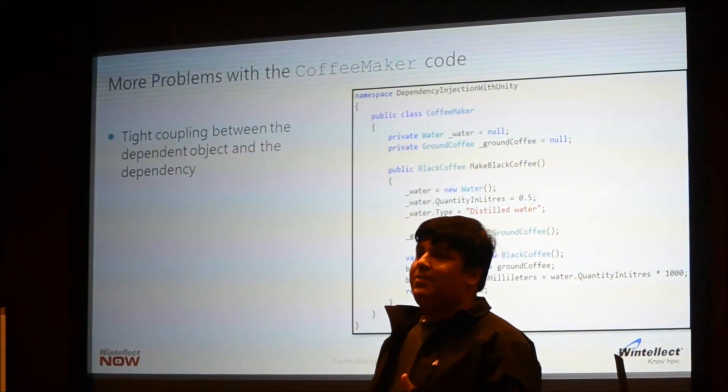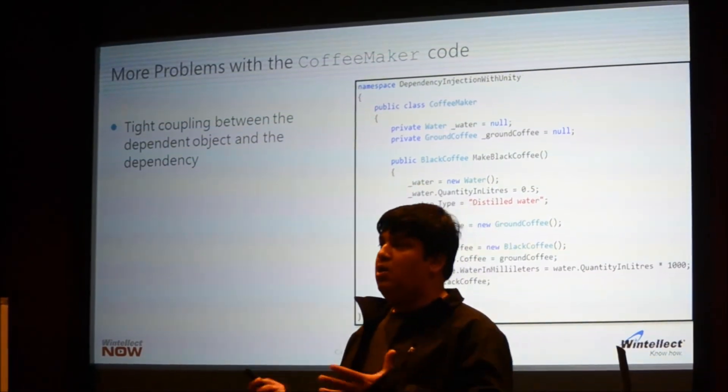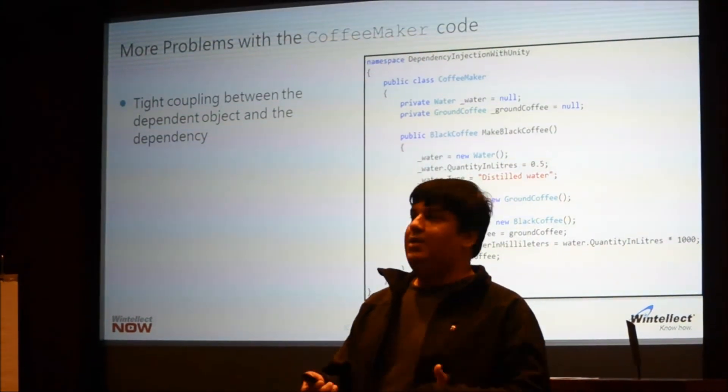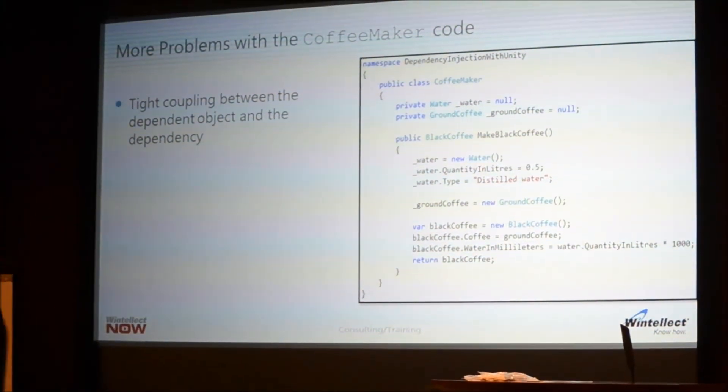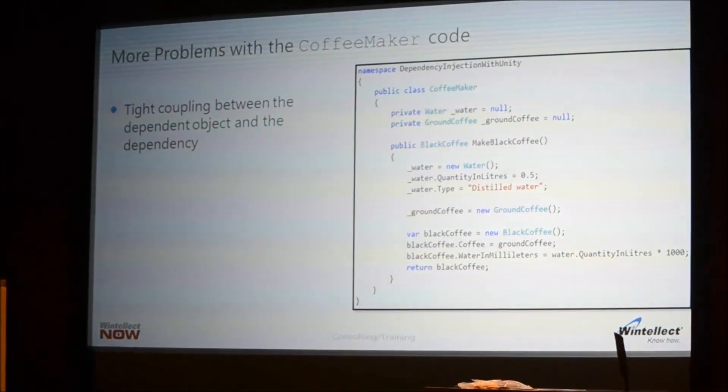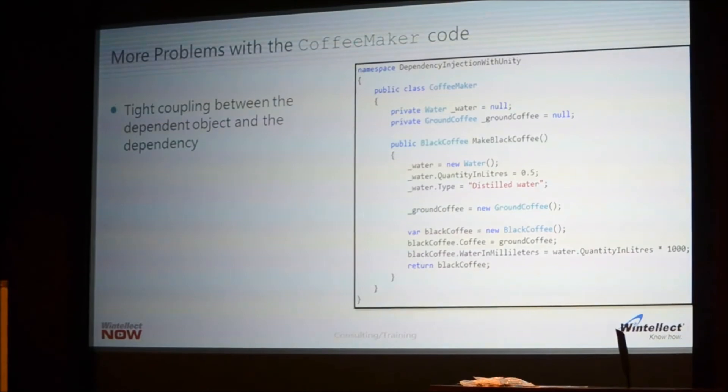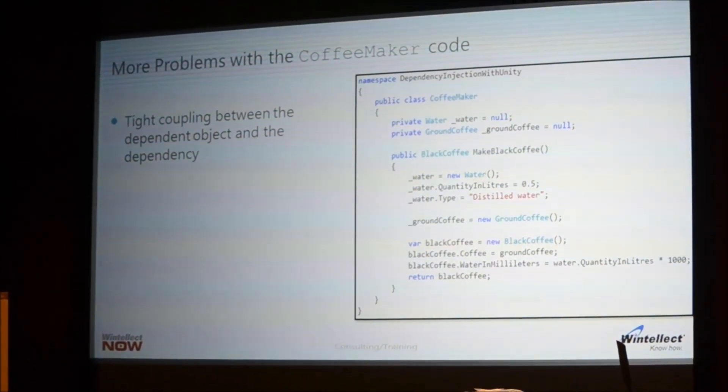Which means, ideally, you would want to have water coming from the outside, which is what you do with a real-world coffee maker. You put water from the outside, you put coffee powder from the outside. Whereas, this code doesn't allow you to do that. If you wanted to share the coffee maker class with someone, you would have to share the water class and the ground coffee class with them as well.